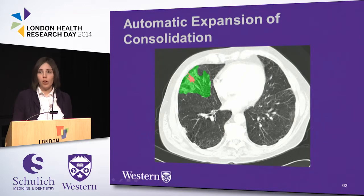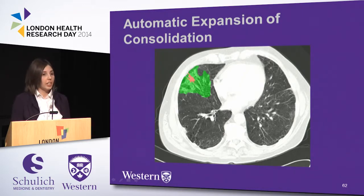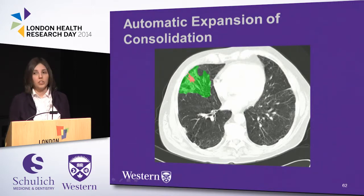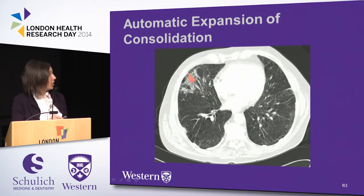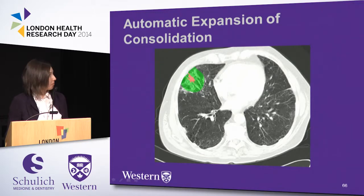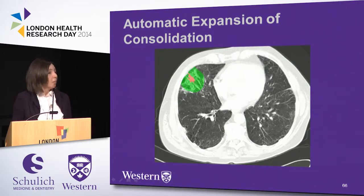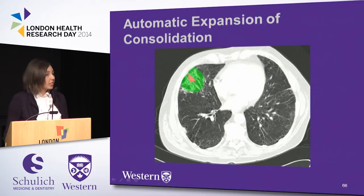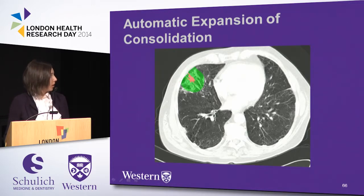Since our most predictive features were all within the ground glass opacity region, and manually contouring these regions is very time-consuming and difficult due to the ill-defined border, we also looked at whether we could use only the consolidation region and automatically expand it at different radii to act as a GGO surrogate. Overall, distances of about one and a half to two centimeters from the solid showed excellent reproducibility with the manual GGO contours within about 5% error.